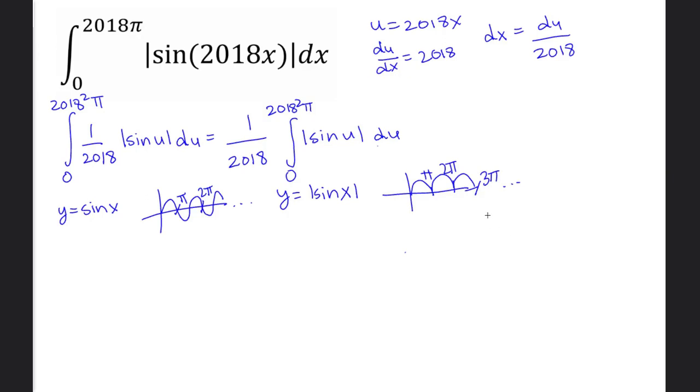What we do here is find the area of one of these little bumps and multiply it by 2018². Since it's asking us to find the area of these bumps until 2018²π.